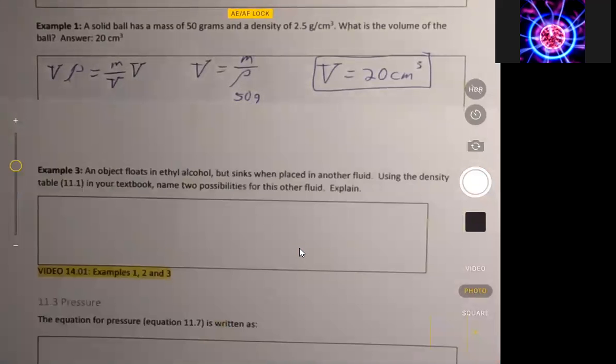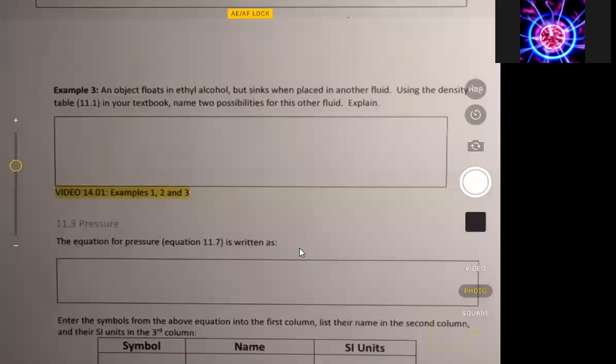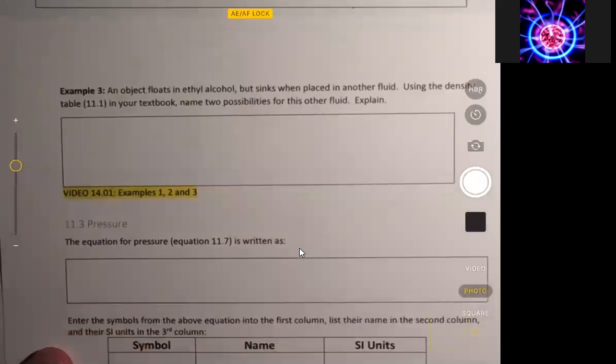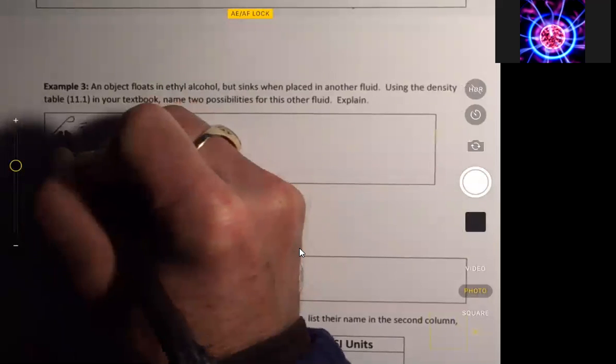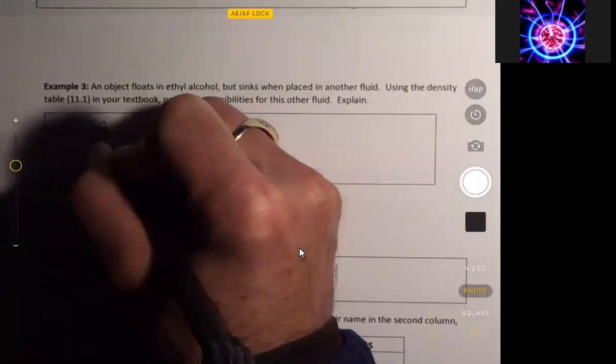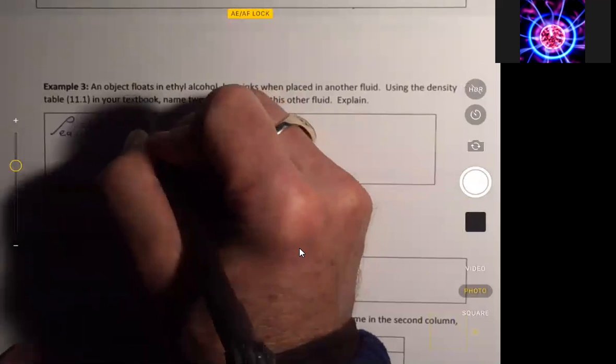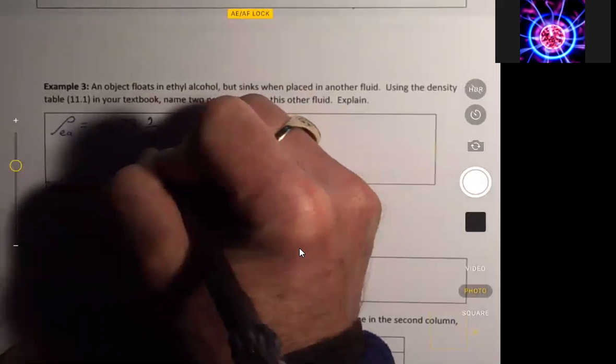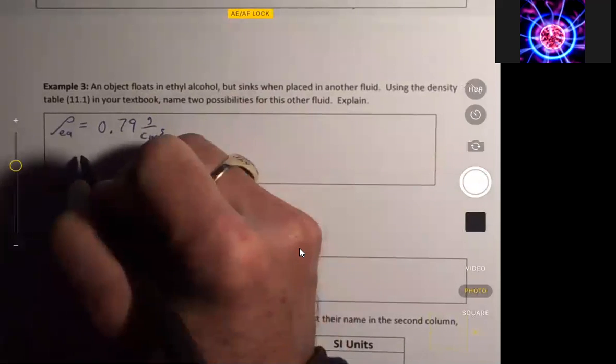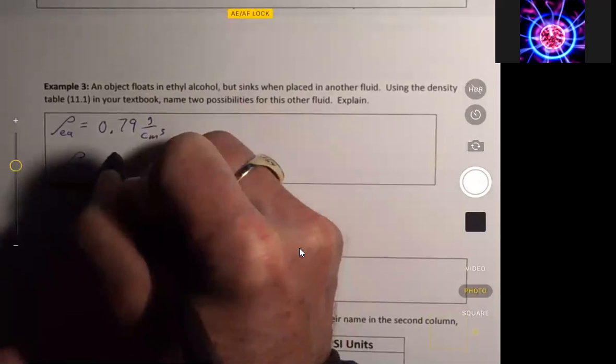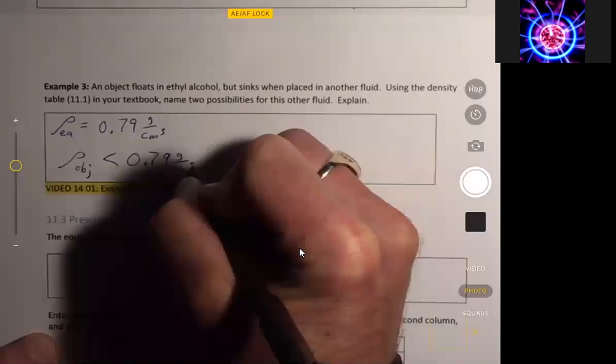Now let's look at example three here. An object floats in ethyl alcohol, but sinks when placed in another fluid. So we look in table 11.1, and we see the density of ethyl alcohol is 0.79 grams per cubic centimeter. If it floats in ethyl alcohol, that means the density of the object is less than 0.79 grams per cubic centimeter.